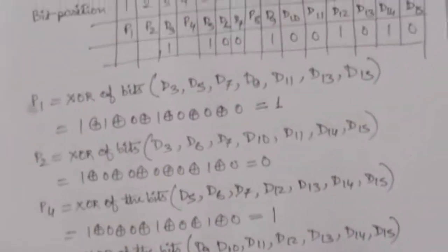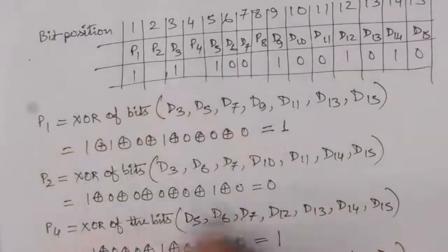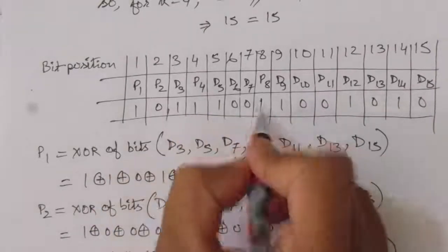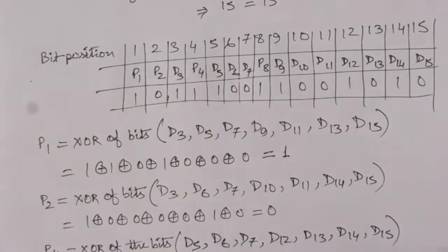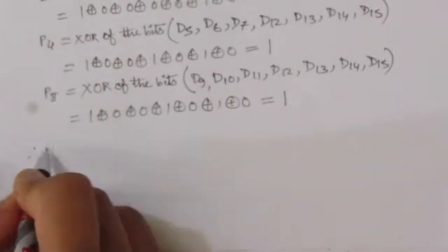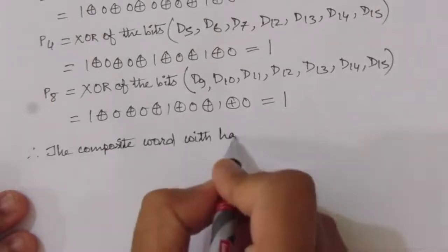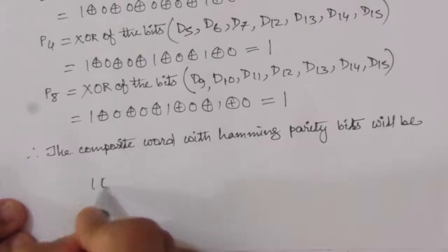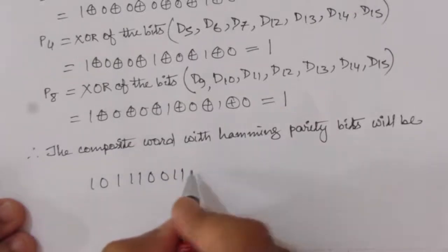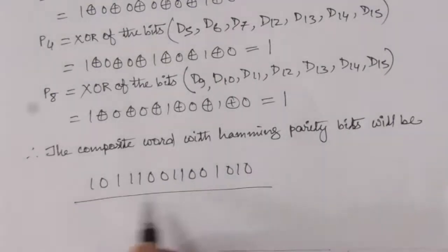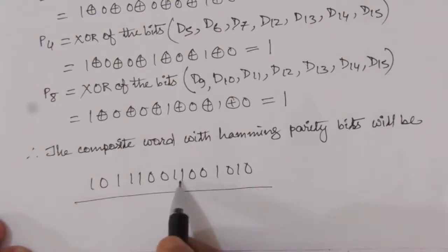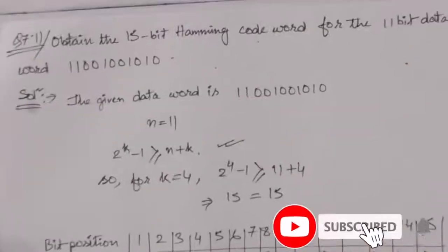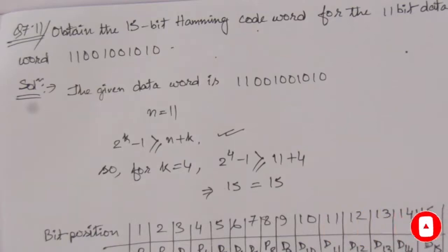We have found P1=1, P2=0, P4=1, and P8=1. Filling these into the table, the composite 15-bit word with Hamming parity bits is 1 0 1 1 1 0 0 1 1 0 0 1 0 1 0 — that is, 101110011001010. This is the solution to problem number 7.11. Thank you for watching; if you have any questions please put them in the comments, and please like, share, and subscribe.